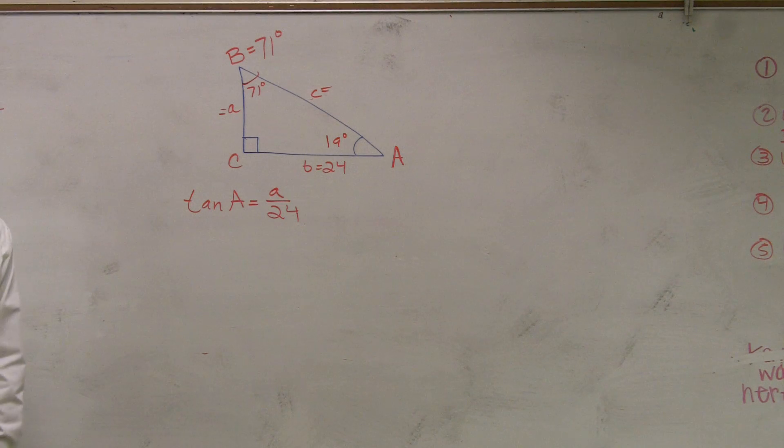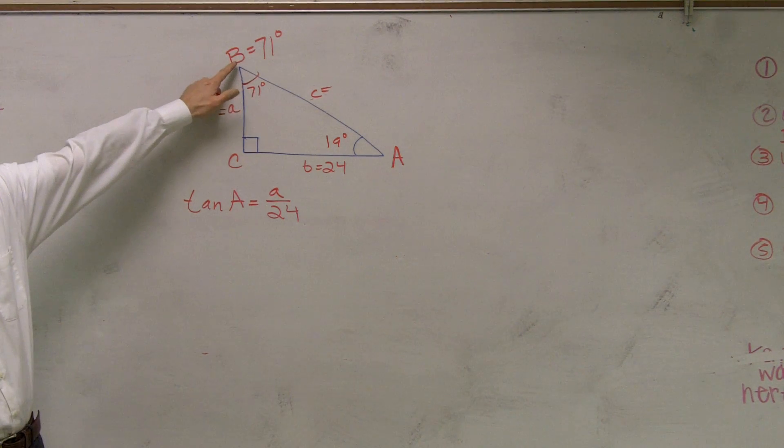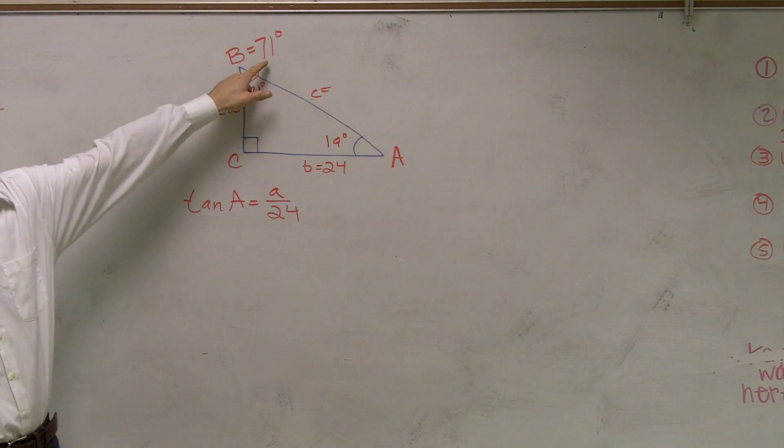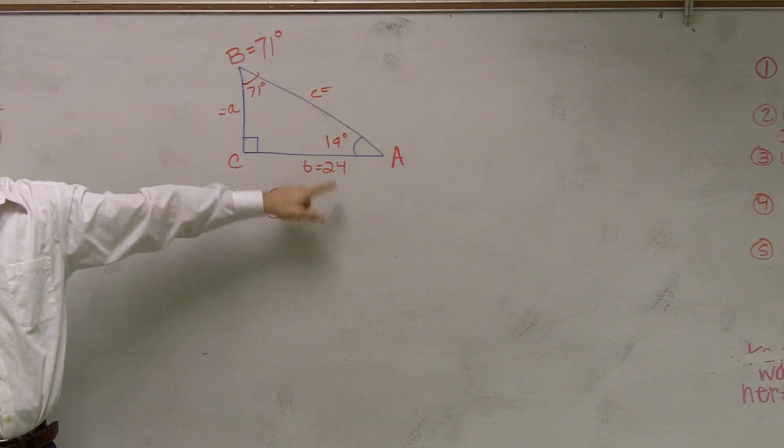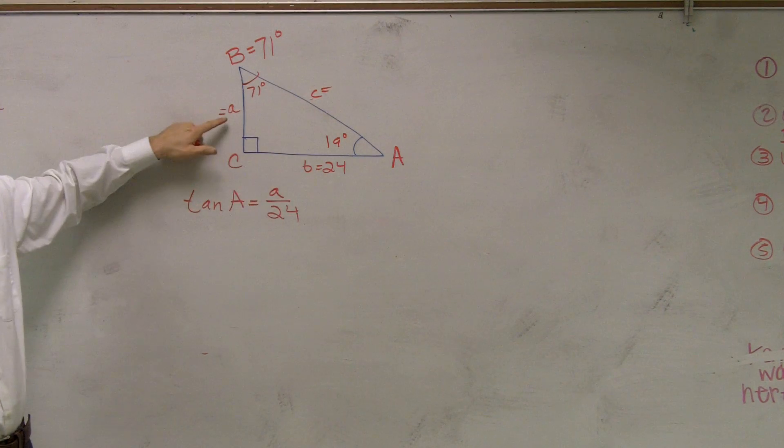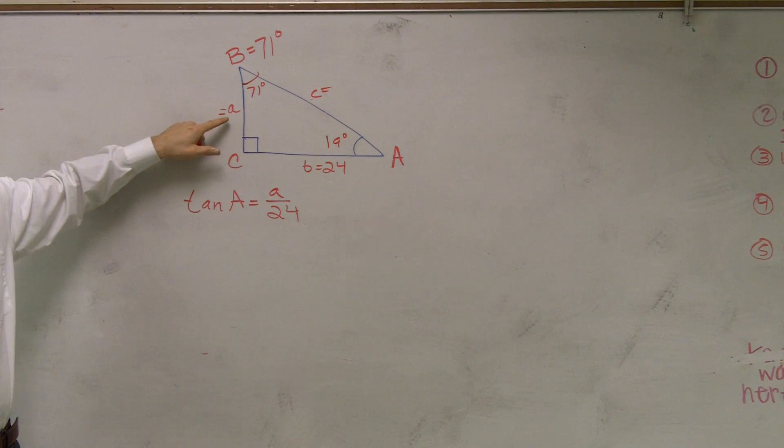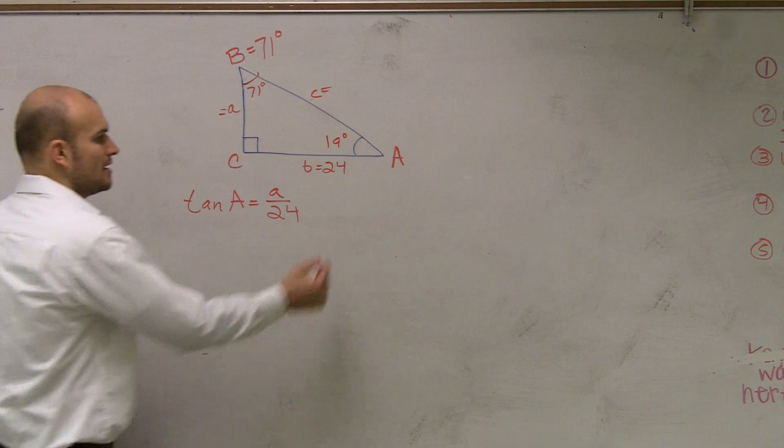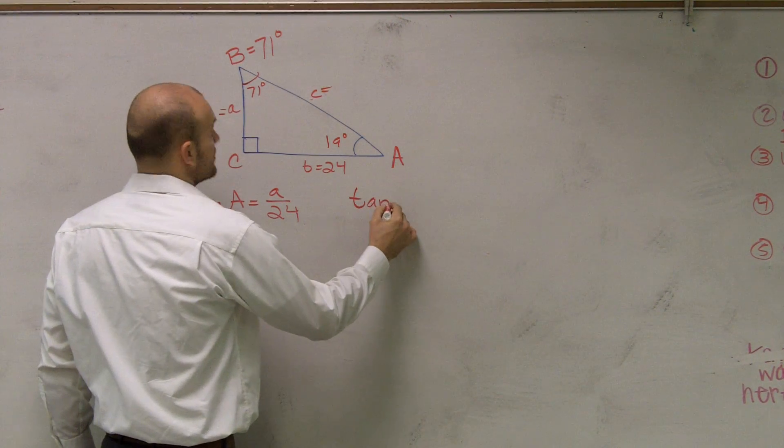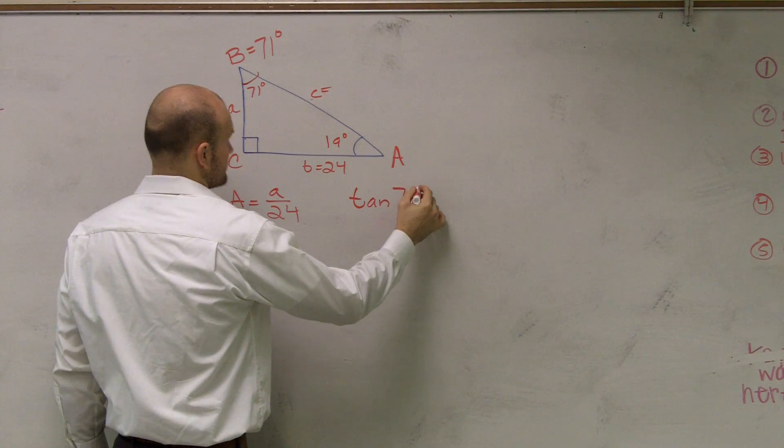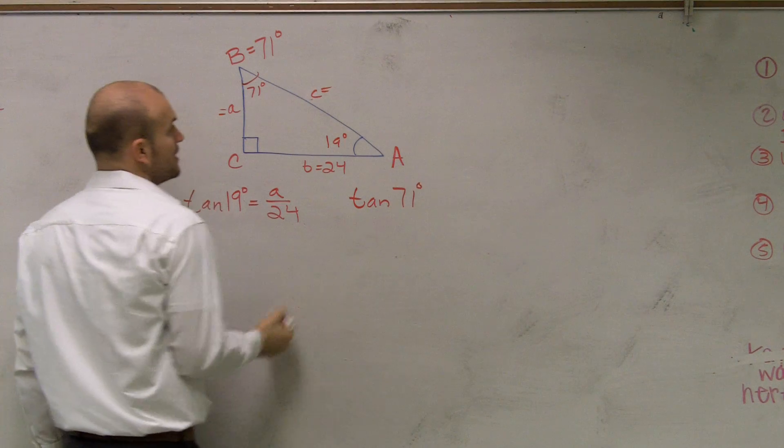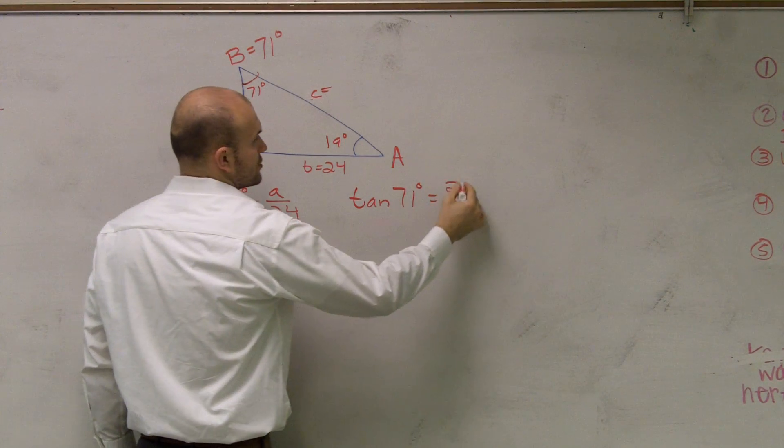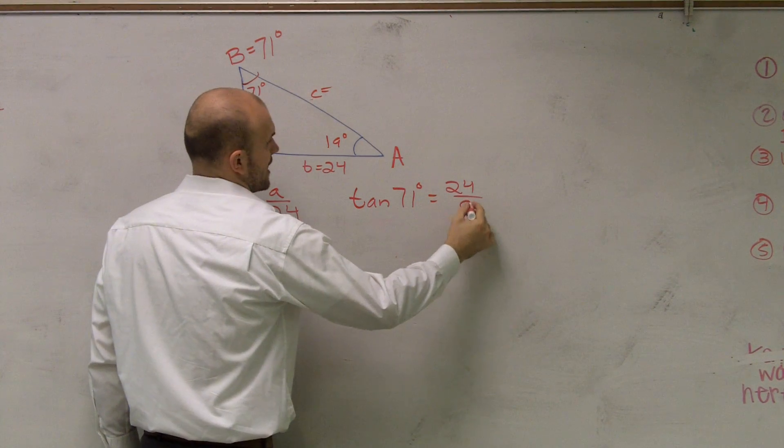So what trigonometric function works with opposite and adjacent? Tangent, right? So I could say tangent of angle A equals A over 24, right? How about, let's say if I wanted to use the B angle, because I know what that angle is as well. So again, if I look at this now, 24 is the opposite of my angle B, and now A is my adjacent side. So if I wanted to use B as my angle, I would use tangent of 71 degrees, this should be 19, not A. Tangent of 71 degrees equals 24 over A.